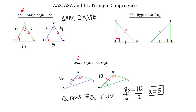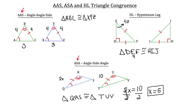Let's make it a math problem with angles. If angle E were 40 degrees on triangle DEF, what would angle I be on triangle HIJ? From the congruency tick marks, triangle DEF must be congruent to triangle HIJ by the hypotenuse leg triangle congruency postulate. That means angle E in triangle DEF must be congruent to angle I in triangle HIJ, so angle I must be 40 degrees as well.